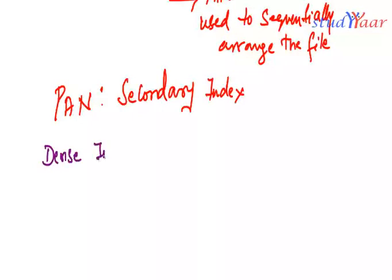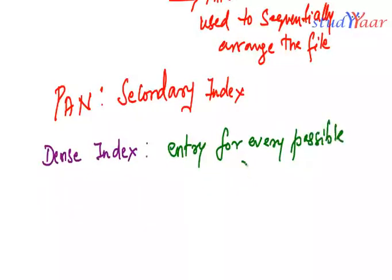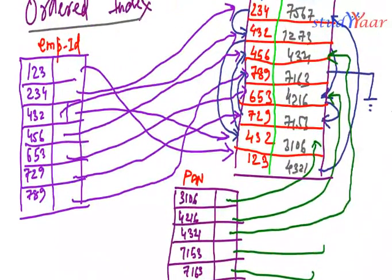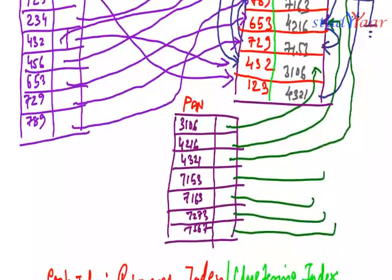Now we will also look at some more terminologies. These terminologies are a dense index. A dense index has an entry for every possible search key value.